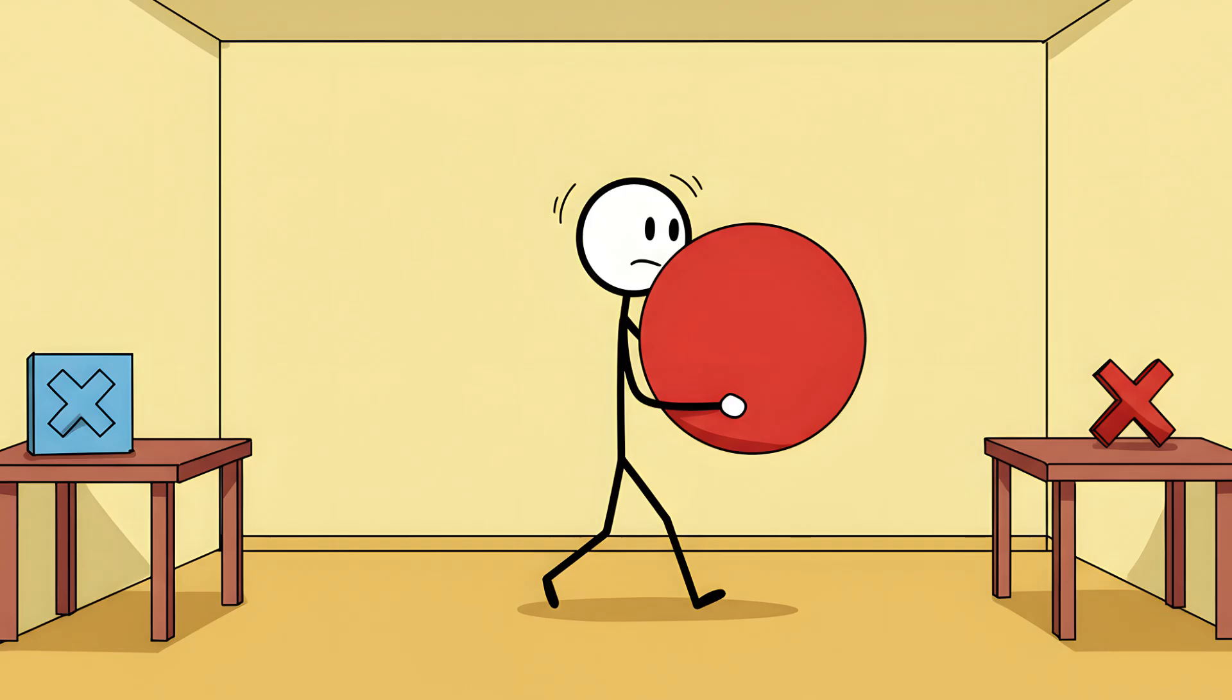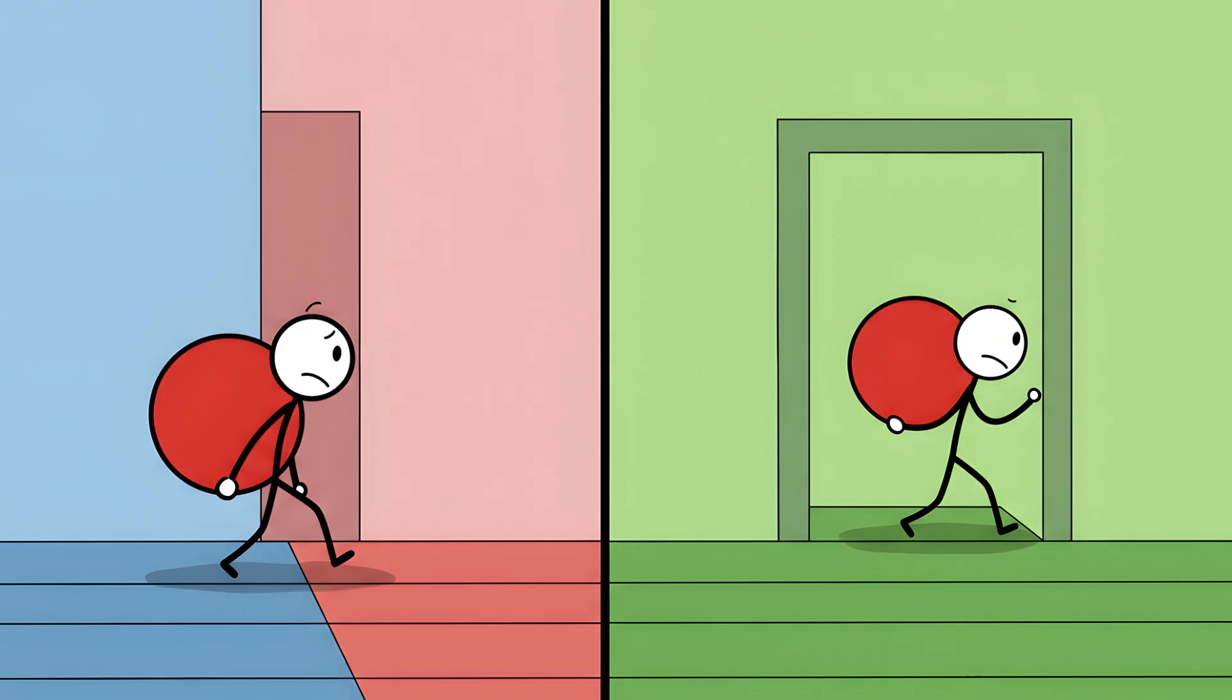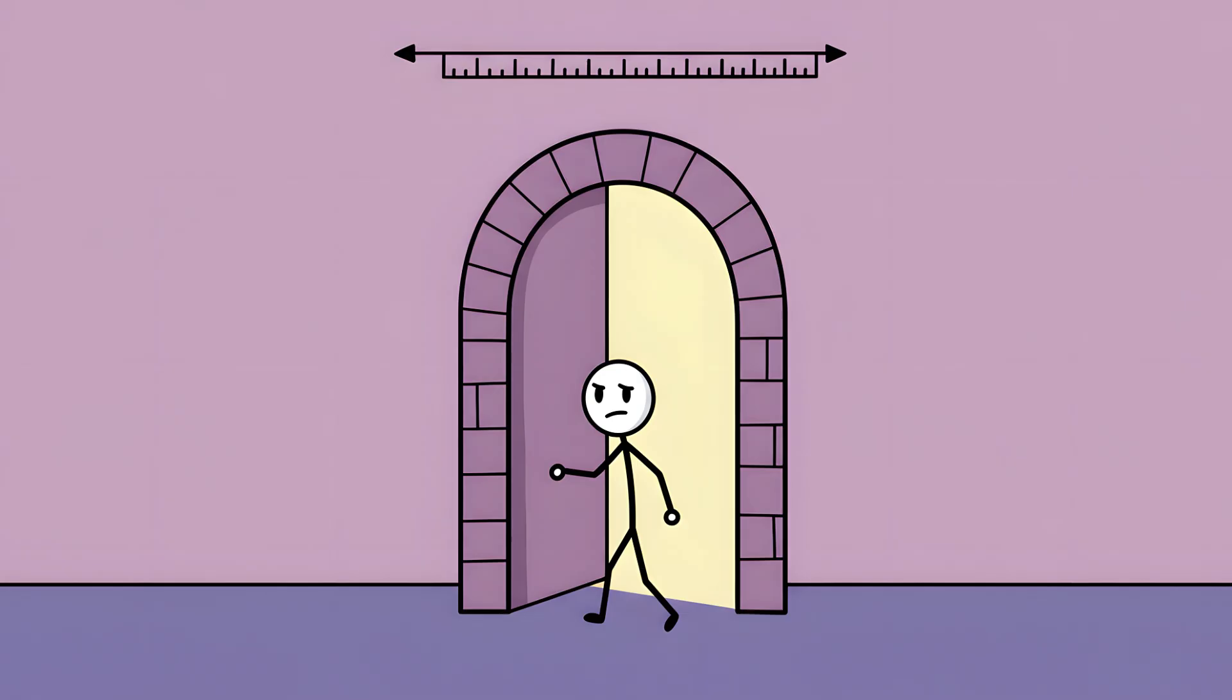The subject's task was simple. They would pick up an object, a blue cross, a red circle, and carry it from one table to another. Sometimes, they had to carry the object across a single large room. Other times, they had to carry it through a doorway into a new room. The distance was exactly the same. The effort was identical. The only variable was that simple, pixelated doorway.